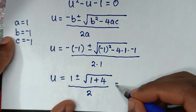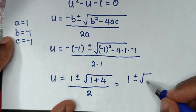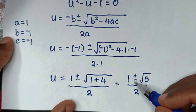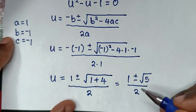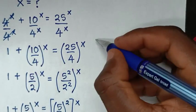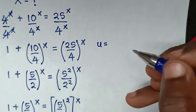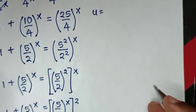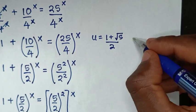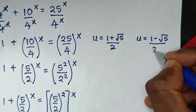So it equals 1 plus or minus square root of 1 plus 4, which is 5, over 2. Therefore, u equals (1 ± √5) / 2. The two solutions are u equals (1 + √5)/2, and u equals (1 − √5)/2.